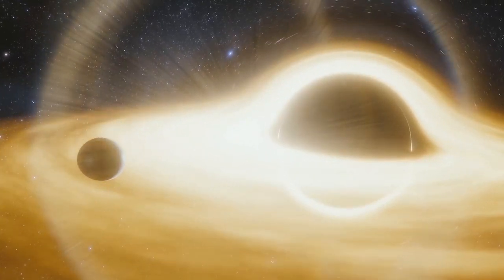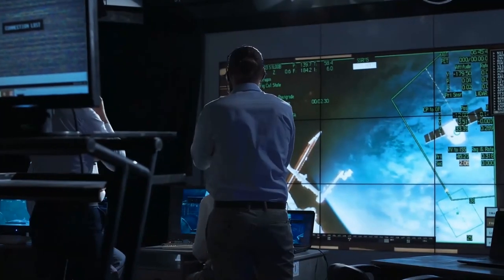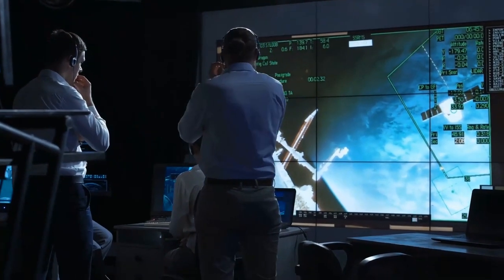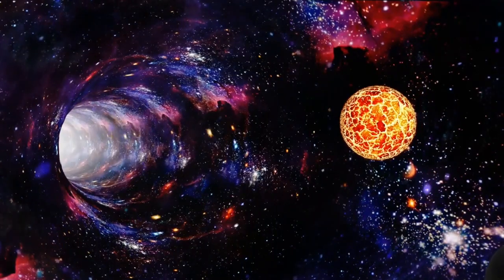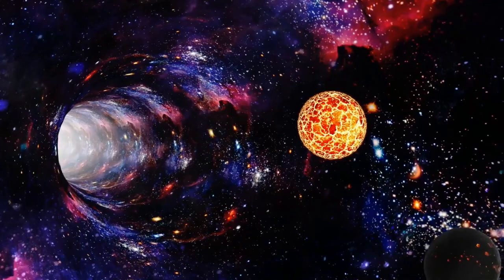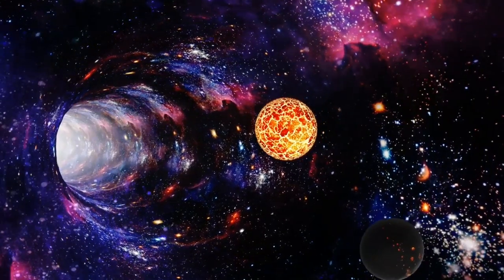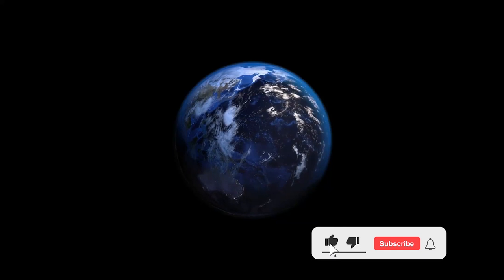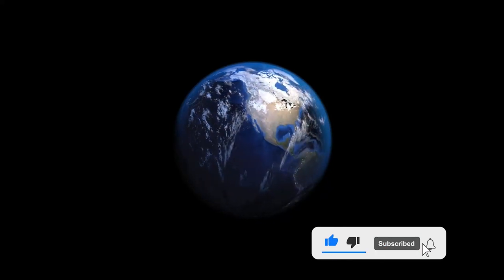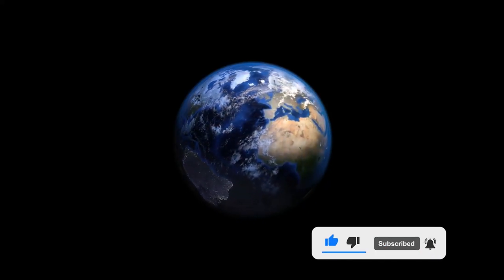Not much is known about black holes due to their mysterious nature, but now scientists may finally have the ability to observe one from Earth. Black holes are gravitational anomalies that annihilate anything that crosses their path. Recent reports say that one of these objects may come so close to Earth that it may be visible to the naked eye. Let's take a closer look.